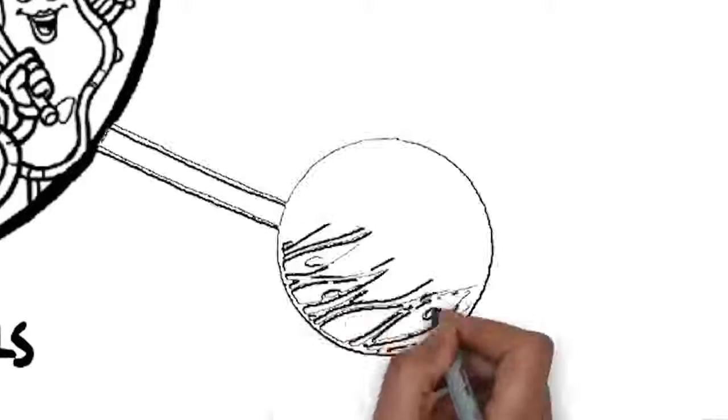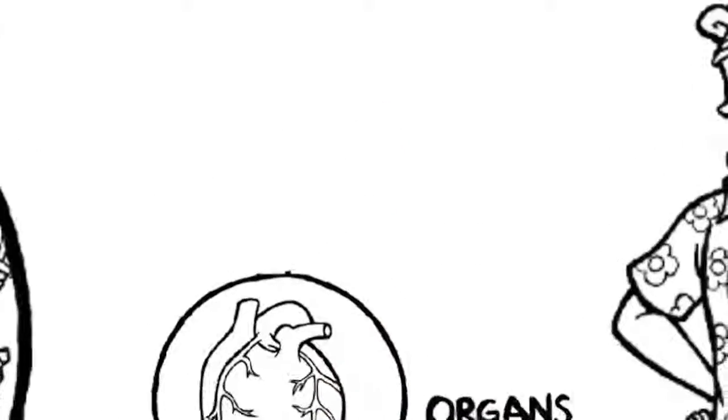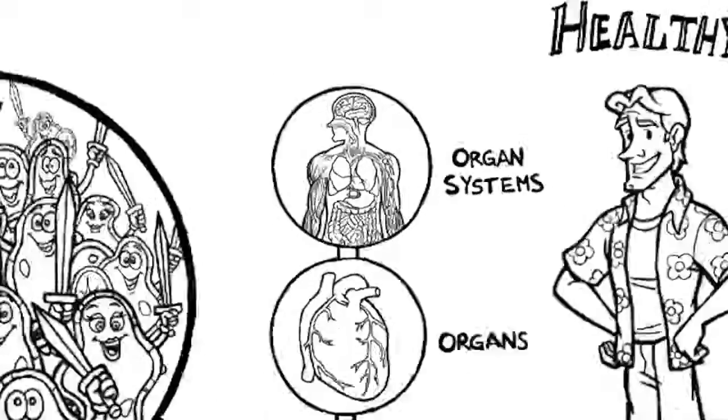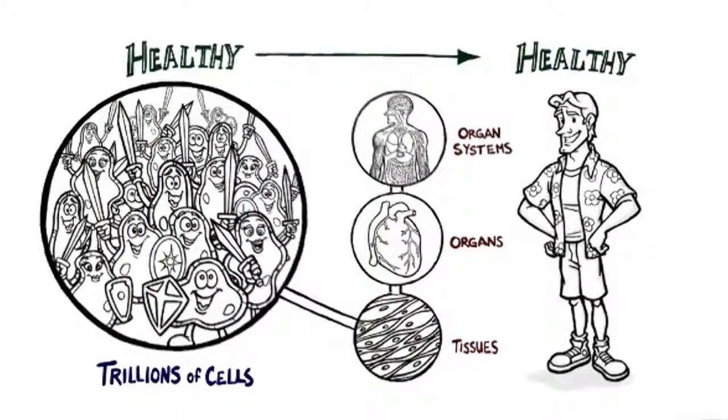Because Tony has healthy cells, he also has healthy tissues, organs, and organ systems that thrive. The state of his cells determine the state of his body.